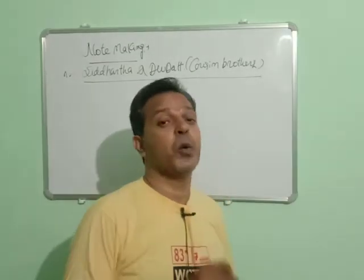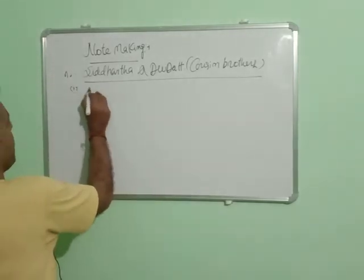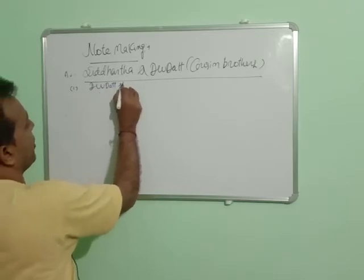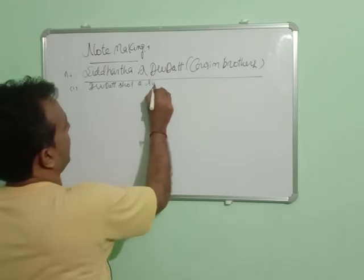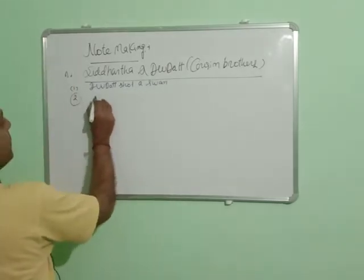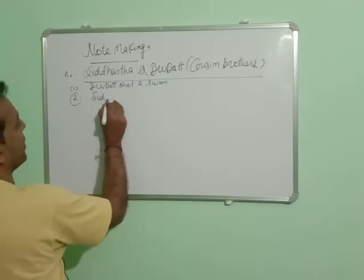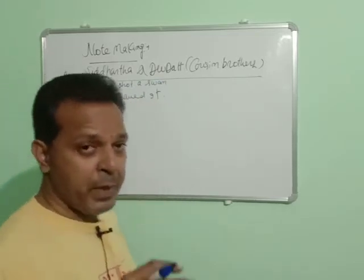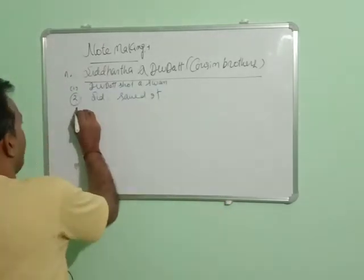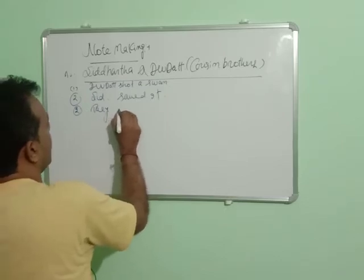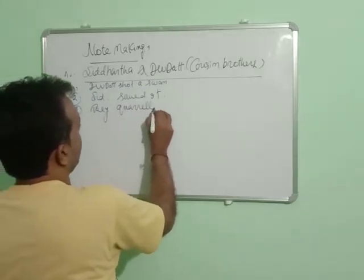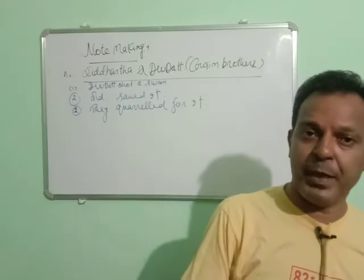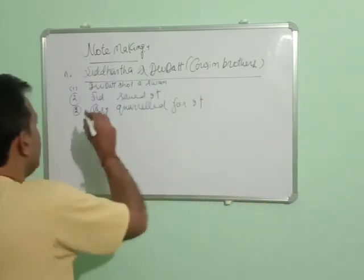Now we write the next points in short. Point one: Devdatta shot the swan. Point two: Siddharth (written as 'Sid') saved it. Point three: they quarreled for it. That completes the first step. Now we pick another important line — point B: Sid and they went to the court.